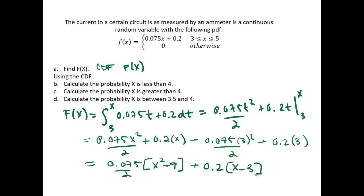Anytime we want to find the probability of x being less than a certain value, we can use this CDF. So in part b, that's exactly what we want to do. Using our CDF, we want to calculate the probability that x is less than 4.